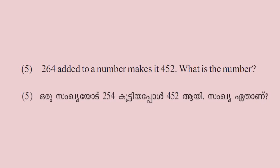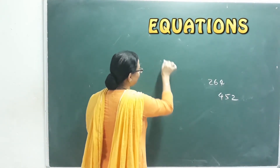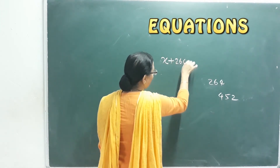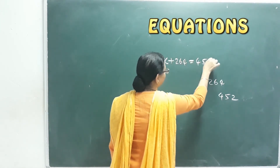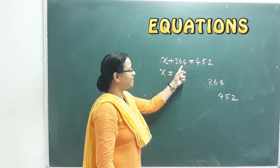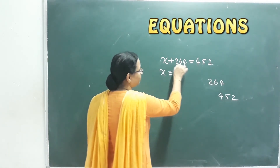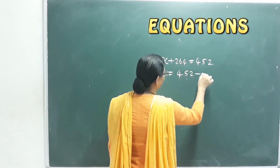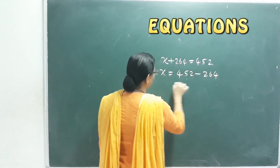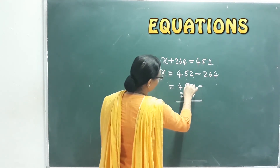264 added to a number makes it 452. What is the number? Let x be that number. x plus 264 is equal to 452. So x is equal to 452 minus 264, which equals 188.